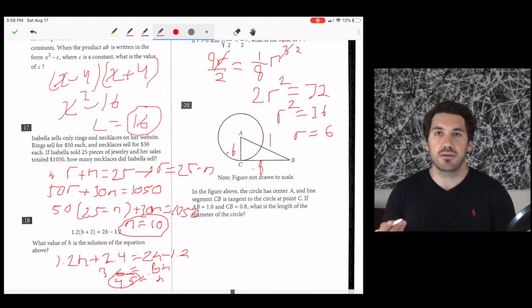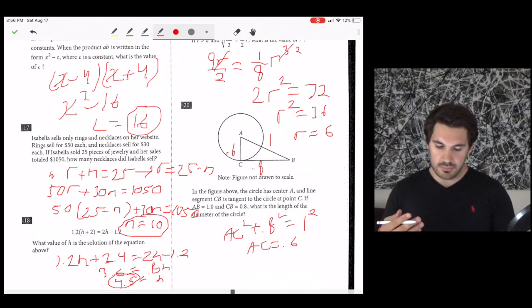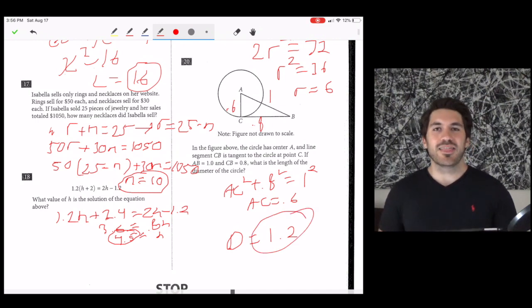Otherwise, you could Pythagorean theorem it instead. You could do AC squared plus 0.8 squared equals 1 squared. And if you did it this way, you would end up getting AC equals 0.6 anyway. So if AC is 0.6, that means the diameter is double that. So the diameter equals 1.2, which is 6 over 5. Cool. That's it. Not so bad, right? That was the non-calc section of this test. Please check it. I'll upload the video for the calc section shortly. You can check it out. And until next time, adios.